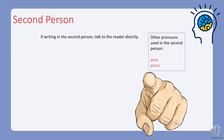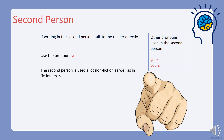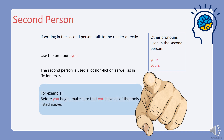Second person: if you are writing in the second person, you are talking to the reader directly, and this kind of writing doesn't happen very often. You will use the pronoun 'you'. The second person is used in both nonfiction and fiction texts. For example: 'Before you begin, make sure that you have all of the tools listed above.' The most common time to see second person is in instruction texts. Other pronouns you might use in the second person are: your and yours.